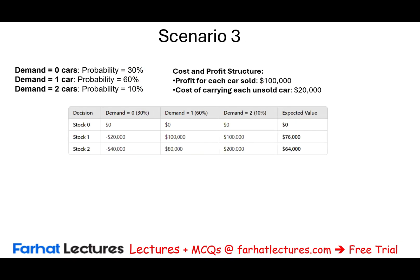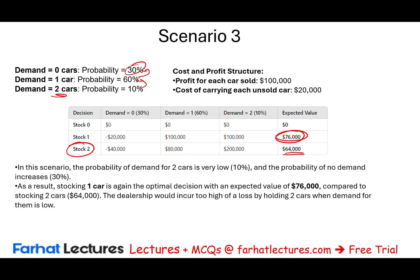Scenario three is more pessimistic. We give zero-demand a 30% probability — perhaps due to higher unemployment in the area or other dealers not selling these cars. The probability is redistributed to one-car demand. Under this scenario, stocking one car is the safest option. Stocking two cars has an expected value of $64,000, but with a high expected loss of $40,000, so you definitely don't want to stock two cars under these assumptions.